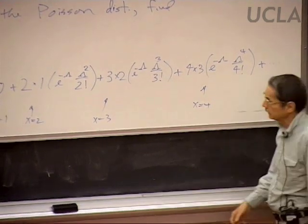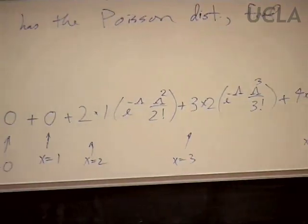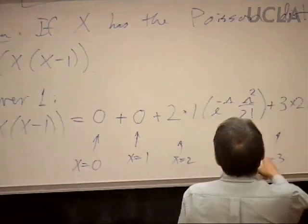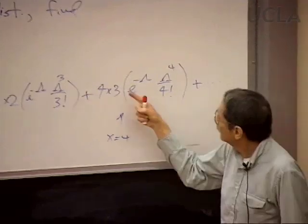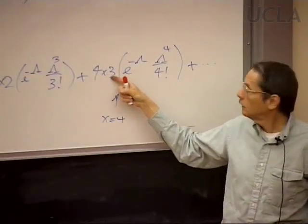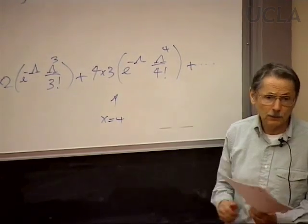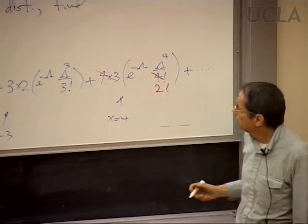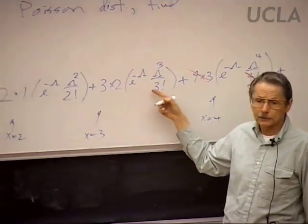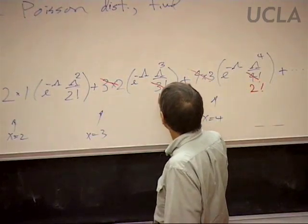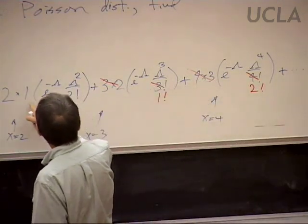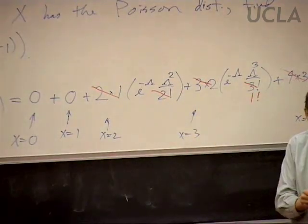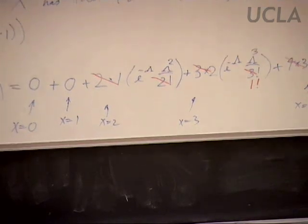We can factor out some things, as we did before, and there are some simplifications. Here we have four times three, and four factorial is four times three times two times one, so the four and three cancel, leaving two times one. The three times two cancels with three factorial, leaving one factorial. The two times one cancels, leaving just one. Let me move the boards around to see what we've got.